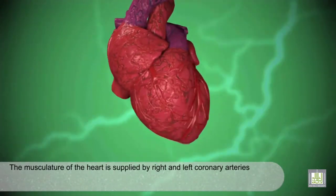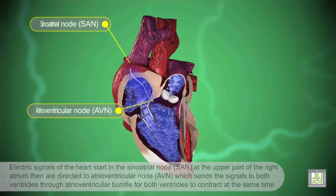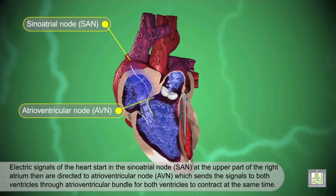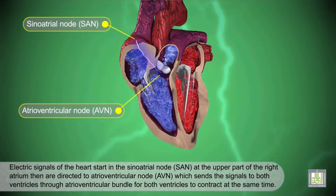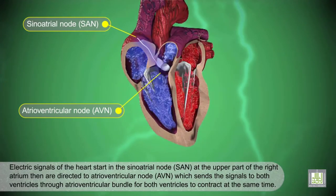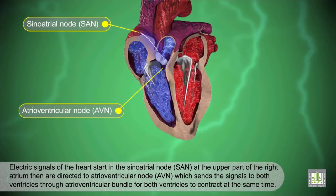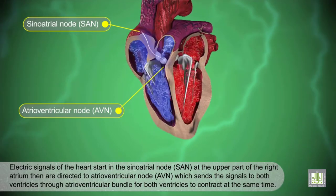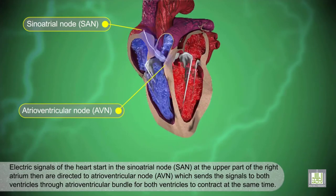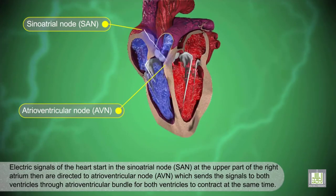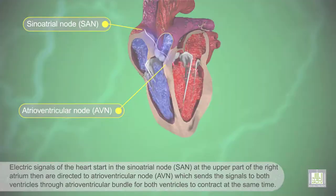The musculature of the heart is supplied by right and left coronary arteries. Electric signals of the heart start in the sinoatrial node (SAN) at the upper part of the right atrium, then are directed to the atrioventricular node (AVN), which sends the signals to both ventricles through the atrioventricular bundle for both ventricles to contract at the same time.